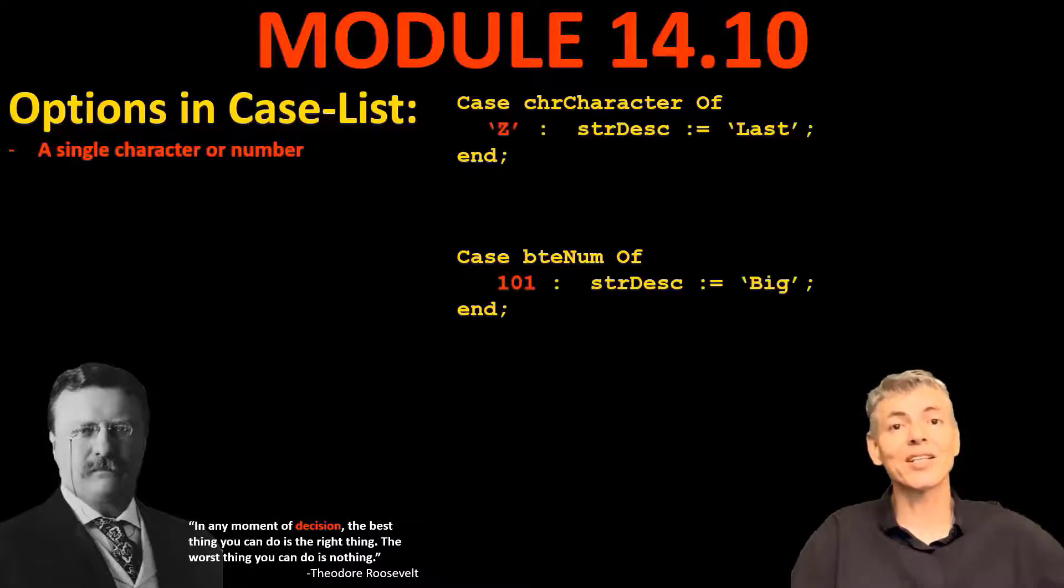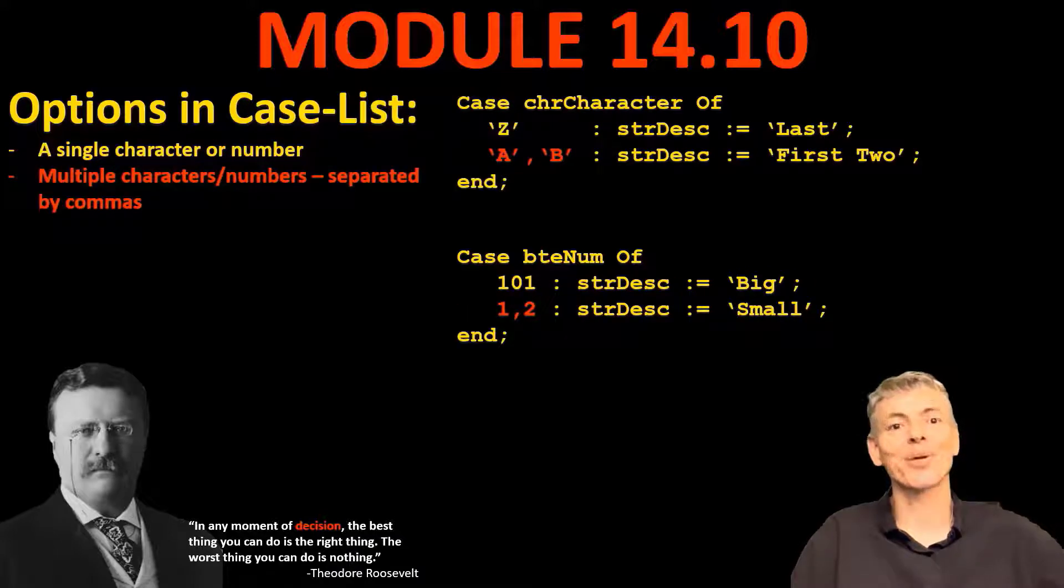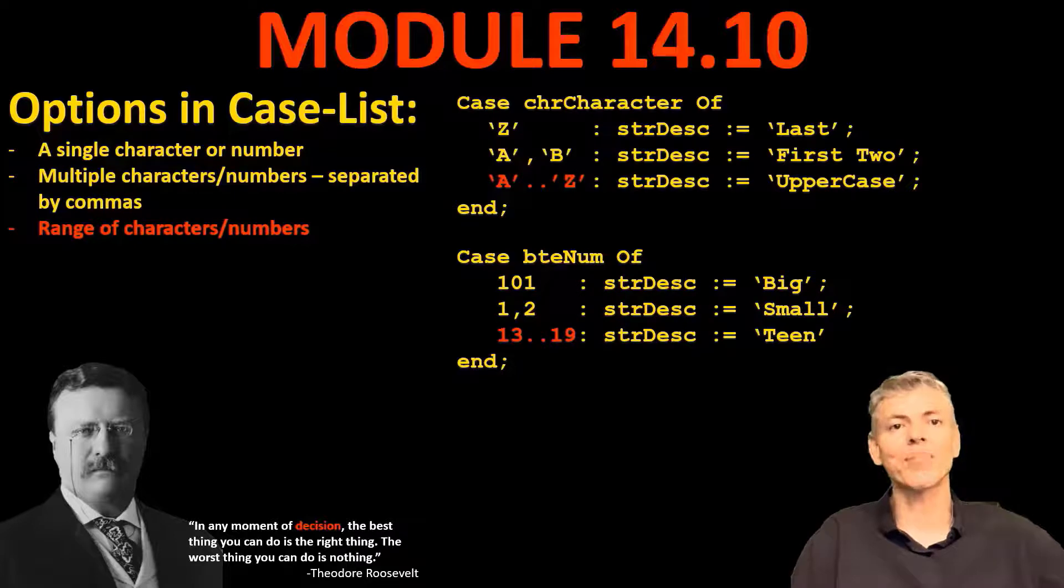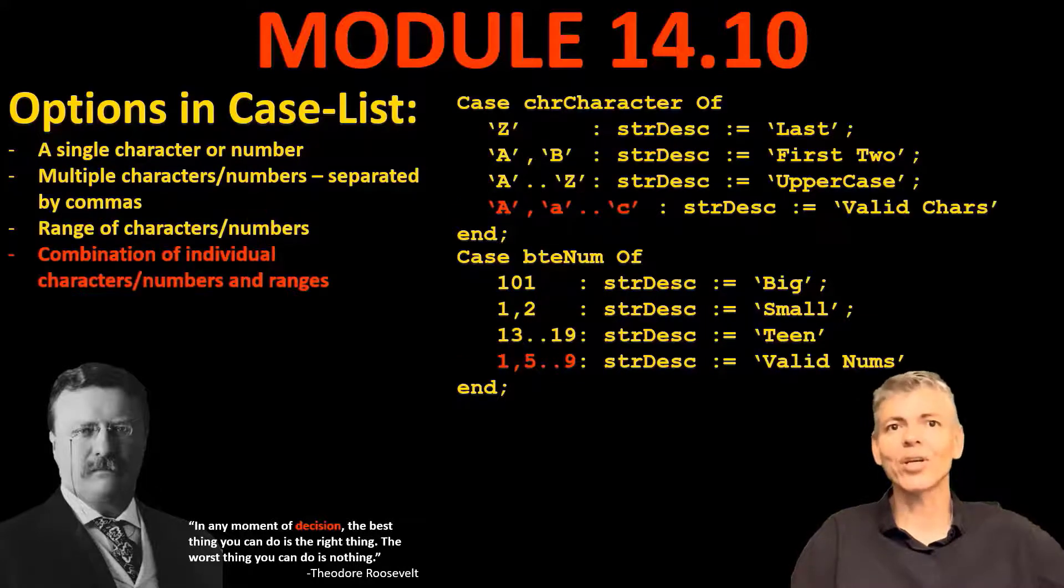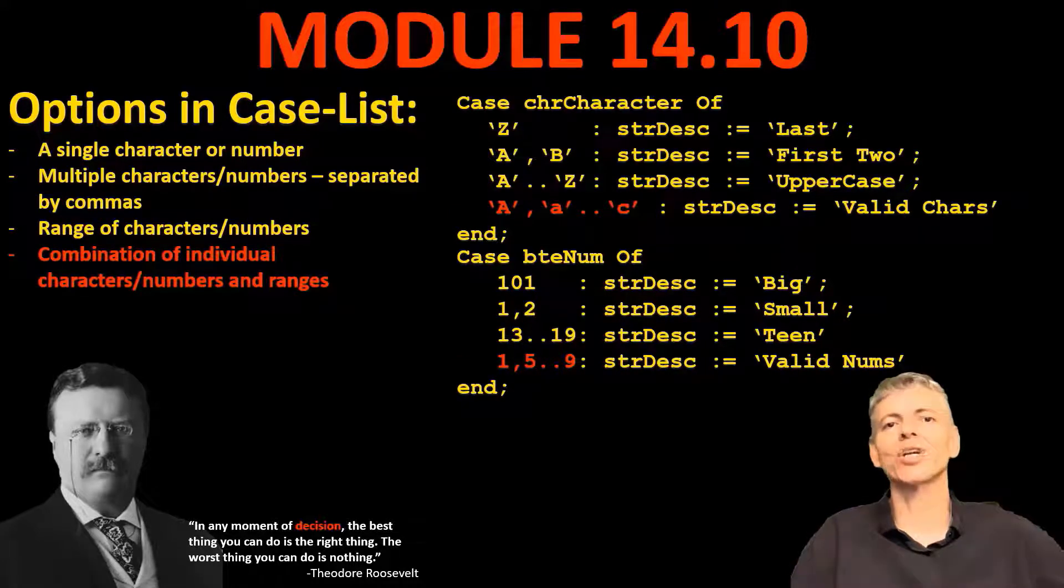Now let's explore the different ways we can structure the options that can be included in the case list. The options in the case list can be a single character or a number. We can also use multiple characters or numbers separated by commas. Or it can be a range or a sub-range of characters or numbers. We use two dots to indicate a range, just like we've seen with sets in the previous lesson. Or you can use a combination of individual characters or numbers and ranges as an option. Let's look at our code again.